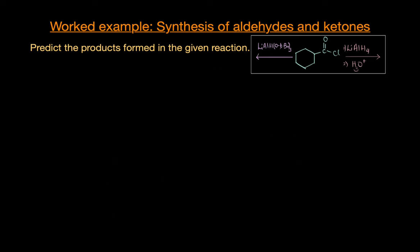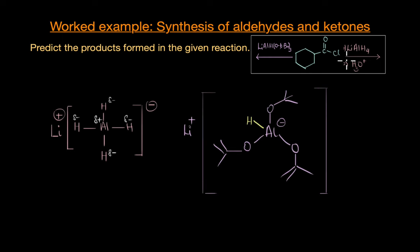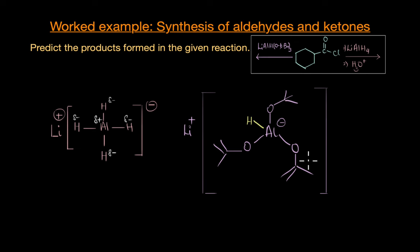Now let's compare and contrast our two reducing agents. We already know the structure of lithium aluminium hydride. The structure of lithium tri-tert-butoxyaluminium hydride is pretty bulky — three of the four hydrogen atoms have been replaced by very bulky, sterically hindered tert-butoxy groups. This steric hindrance is significant: these bulky groups create significant steric hindrance around the only reactive hydrogen atom, making it less accessible for nucleophilic attack. Furthermore, the tert-butoxy groups are also electron-withdrawing because of the electronegative oxygen atom, which further decreases the electron density available on the Al-H bond.